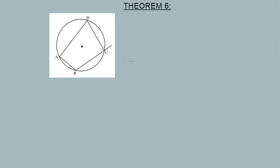Theorem six involves a cyclic quadrilateral, and it's all about the external angle. We're not limited to just one external angle — for example, if you extend a line, the angle formed is an external angle. If you extend another line, that's another example of an external angle, and so on.